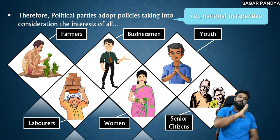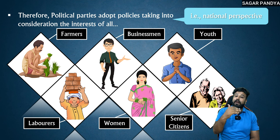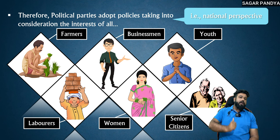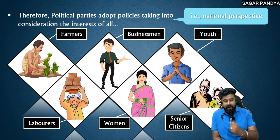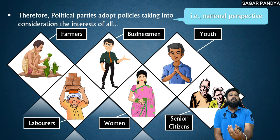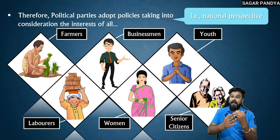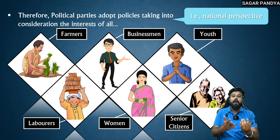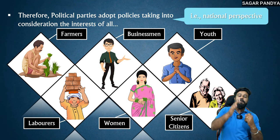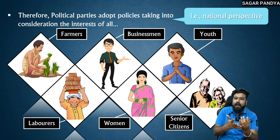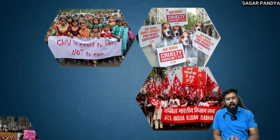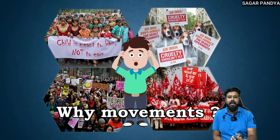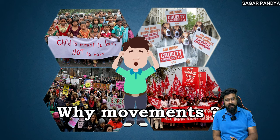But when these problems are not solved, what do people do? People come together in front of the government and first make a request. But if the government still doesn't act on that request and doesn't provide solutions to certain problems, then what will people do? Log movements karte hai — they conduct agitations and movements in different ways.